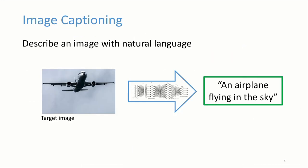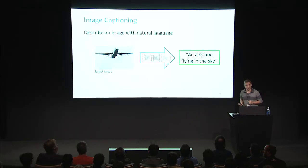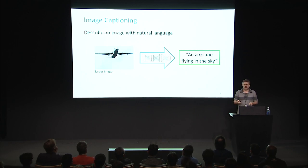This work is about the problem of mapping an image to a natural language description, also known as image captioning. This is an important problem because as you try to understand complex visual scenes, you need a way to represent rich knowledge. Language is the common API that humans develop to pass knowledge. For that reason, there's a lot of recent interest and work in image captioning with impressive results.